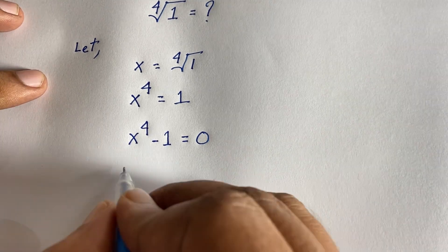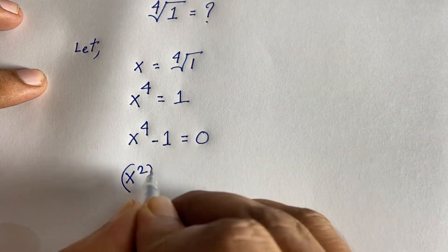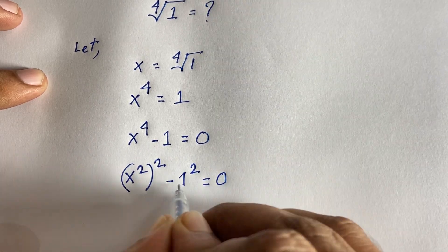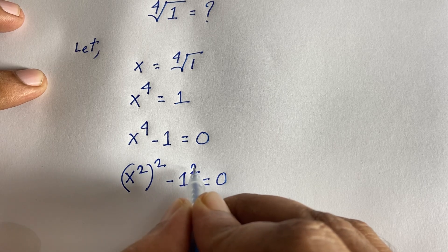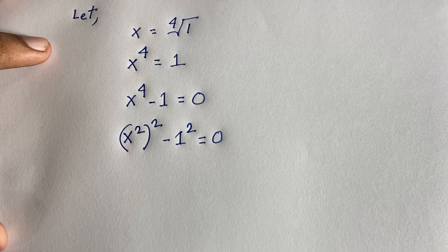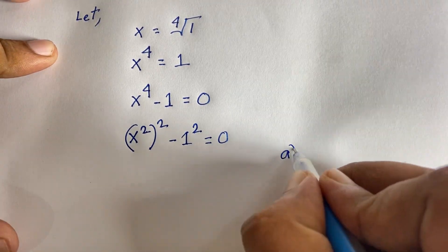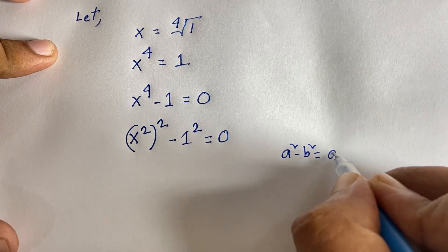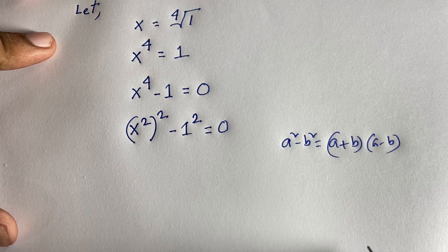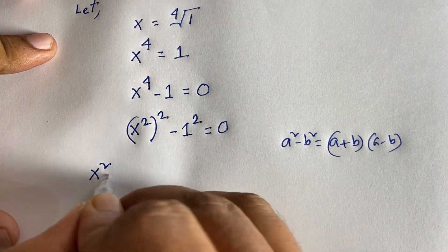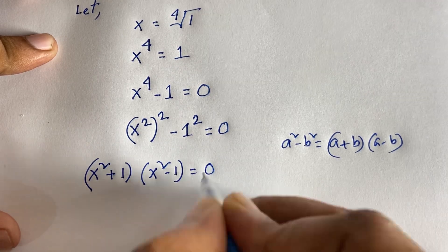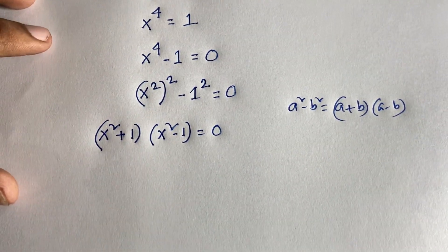We can rewrite this as (x squared) squared minus 1 squared equals 0, since 1 squared is 1 and (x squared) squared is x to the power 4. Using the identity a squared minus b squared equals (a plus b)(a minus b), this expression becomes (x squared plus 1)(x squared minus 1) equals 0.